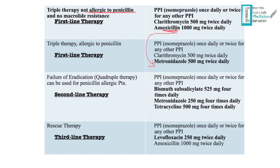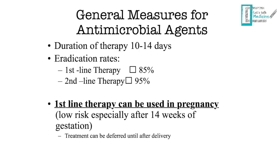Quadruple therapy (second-line, also for penicillin-allergic patients) consists of: PPI, bismuth subsalicylate 525 mg four times daily, metronidazole four times daily, and tetracycline four times daily. The rescue (third-line) therapy is: PPI, levofloxacin (a fluoroquinolone), and amoxicillin — substituting metronidazole for amoxicillin if the patient is penicillin-allergic. Patient compliance with multiple daily doses is essential; treatment duration is 10 to 14 days.